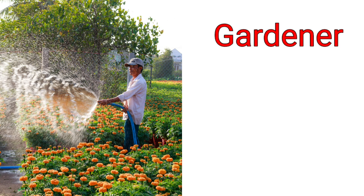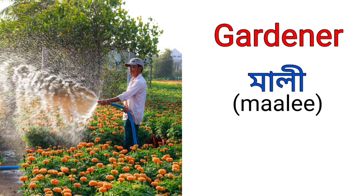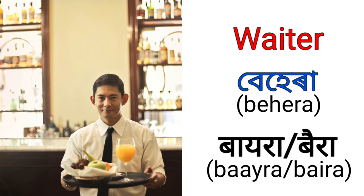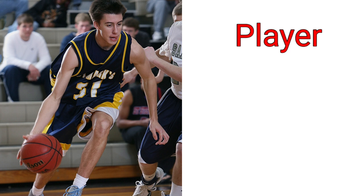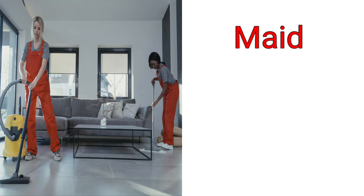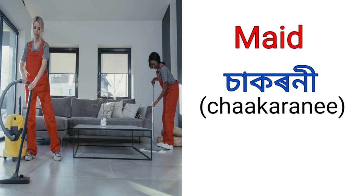Gardener is called Mali in Assamese and Mali in Hindi. Weaver is called Behera in Assamese and Vaira in Hindi. Player is called Khelewe in Assamese and Kheleari in Hindi. Maid is called Sakaroni in Assamese and Nokrani in Hindi.